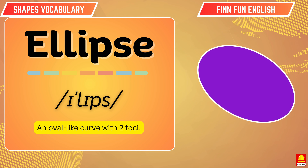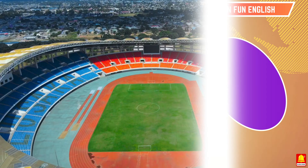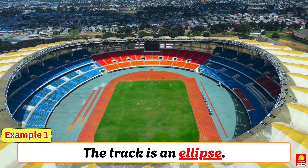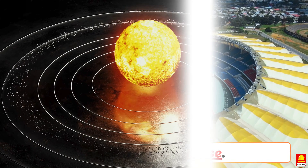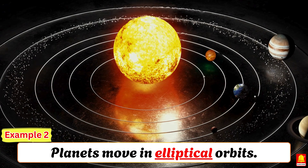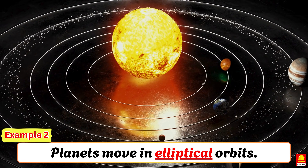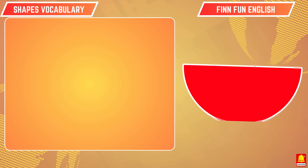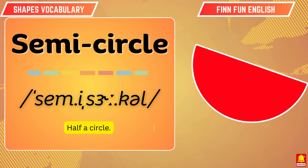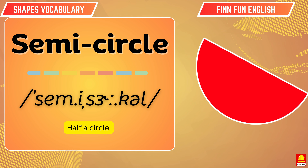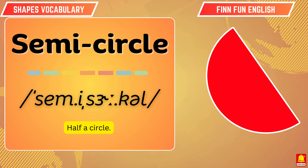Ellipse. The track is an ellipse. Planets move in elliptical orbits. Semi-circle.